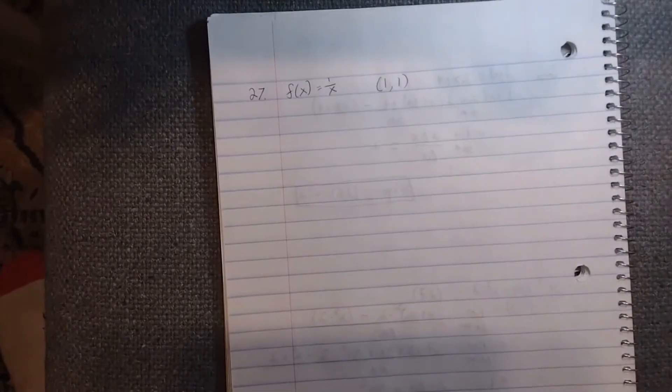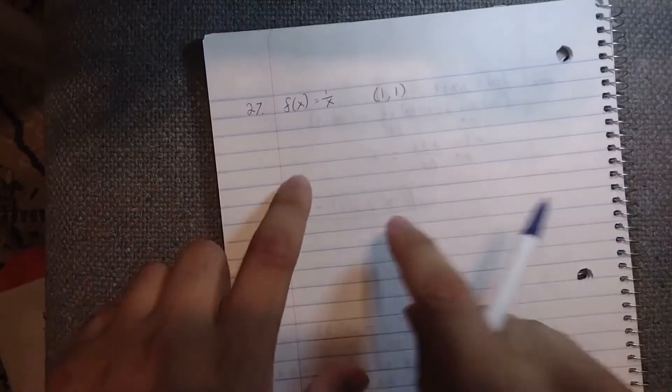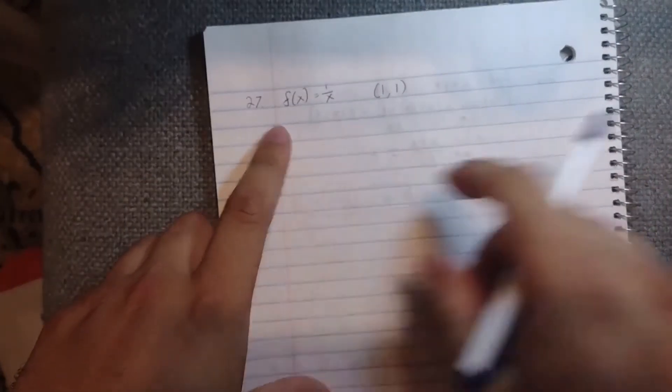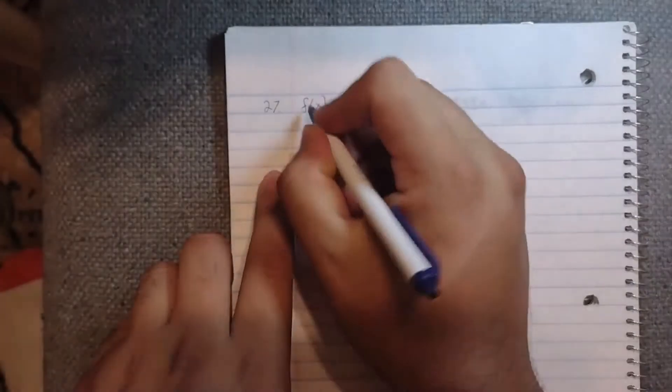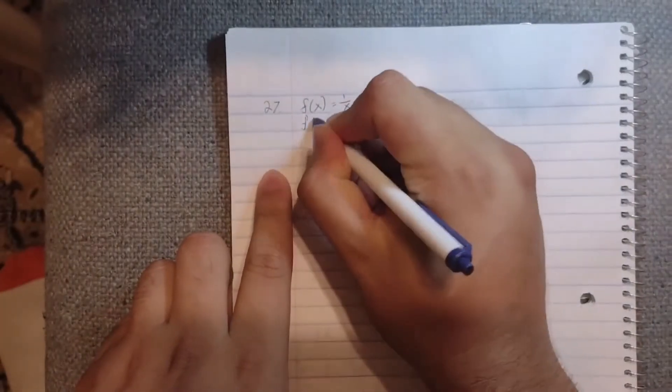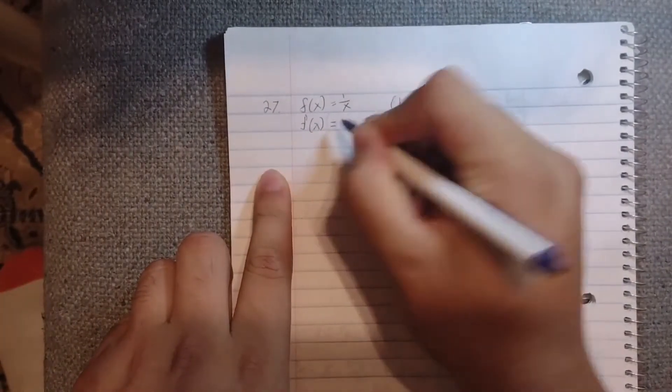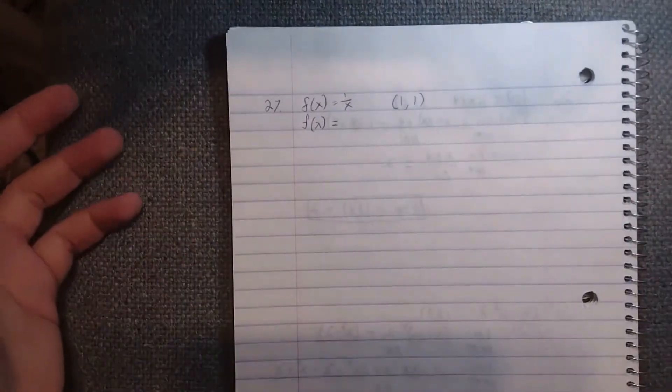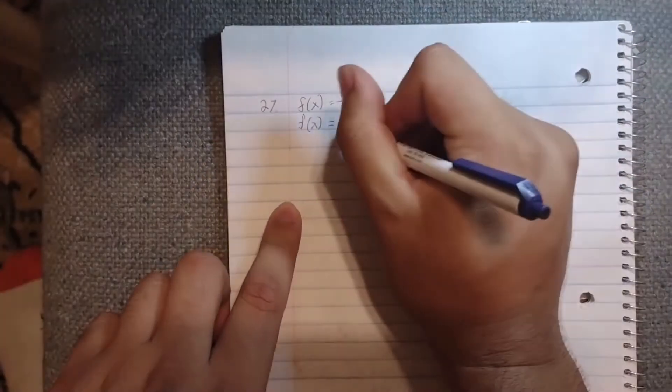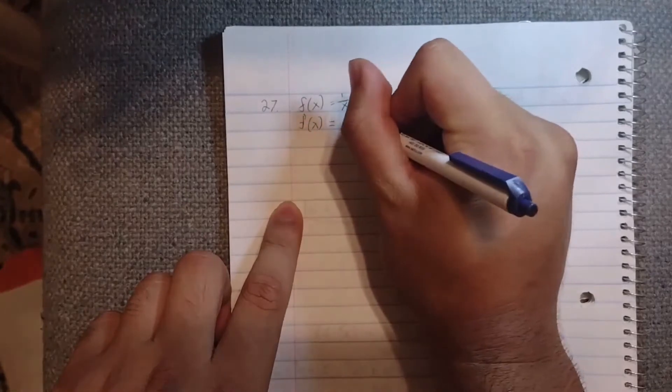First thing we're going to do is write this in a different form, one we might be more comfortable with. So f(x) = 1/x, which is just x to the minus 1 power, so we'll write it as x^(-1).